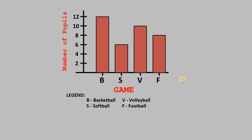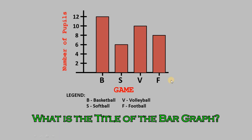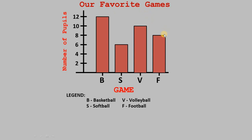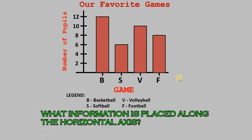Question number one: what is the title of the bar graph? The title of the bar graph is 'Our Favorite Games' — it is written at the top. Second question: in the vertical bar graph, what information is placed along the horizontal axis? According to the bar graph, the information on the horizontal axis is the game.